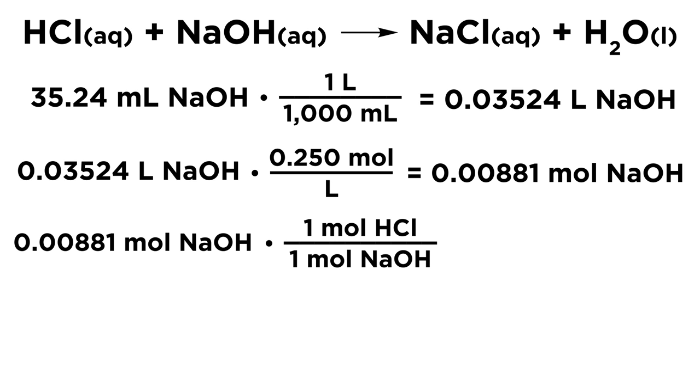So that means if that many moles of base were required to reach the equivalence point, then we multiply by 1 mole of acid over 1 mole of base, and we get that same number of moles back for the acid.